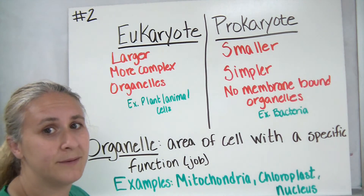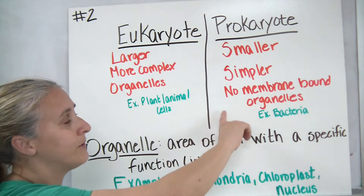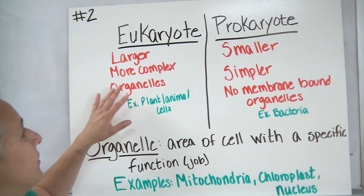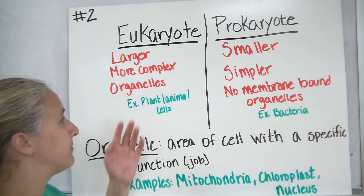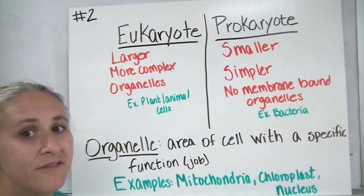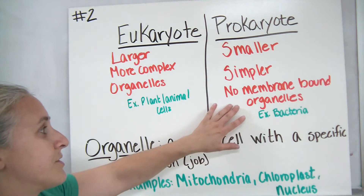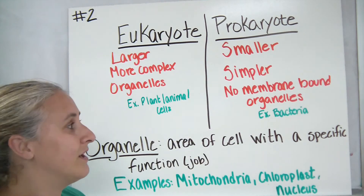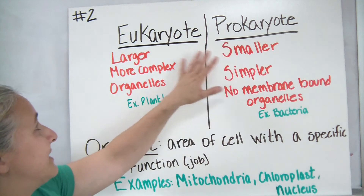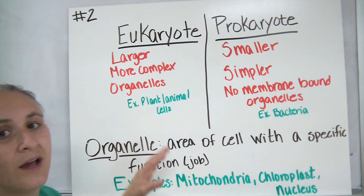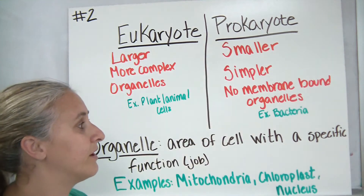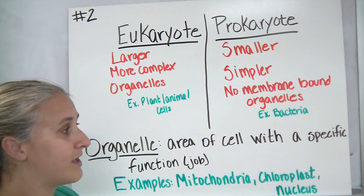Eukaryotic cells have membrane-bound organelles, whereas prokaryotic cells have no membrane-bound organelles. Examples of organelles would be mitochondria — mitochondria has a membrane surrounding it — and chloroplasts. Eukaryotic cells have these organelles with membranes surrounding them, whereas a prokaryotic cell does not have these organelles. One of the other main membrane-bound organelles would be the nucleus. Examples of eukaryotic cells are plant cells, animal cells, and fungi. Examples of prokaryotic cells are bacteria and the archaea.